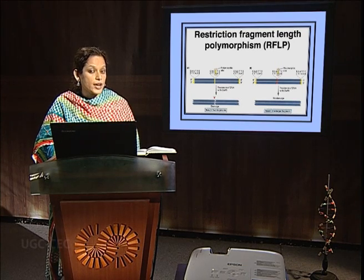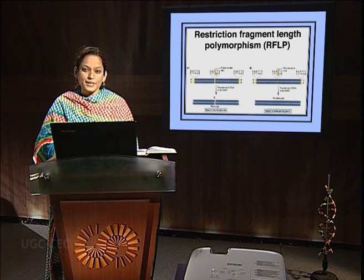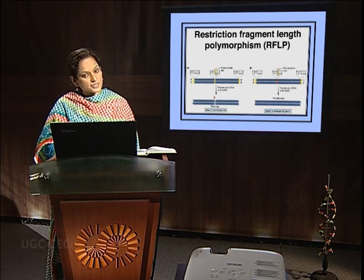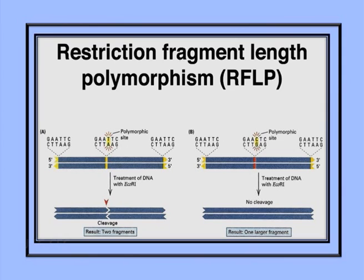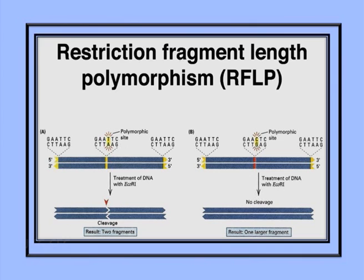A very important application of restriction enzymes is restriction fragment length polymorphism, abbreviated as RFLP. RFLP studies the variation in the pattern of fragments produced when two DNAs are digested with the same restriction enzyme. This variation in fragment pattern is due to variation in the nucleotide sequence, which is caused by polymorphism present in the alleles. As a result, RFLP is a very useful technique in the study of genetic markers as well as in the mapping of genes.